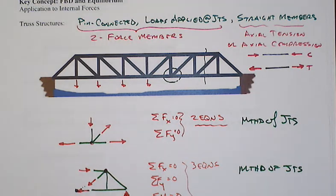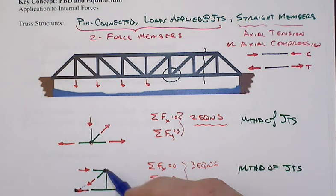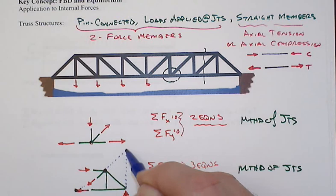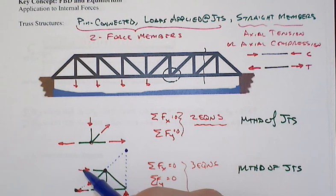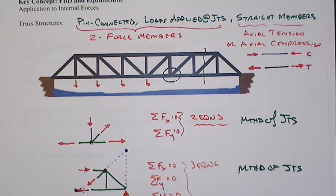Occasionally, you can go off the member and find another point, off the structure. For instance, in this case, I could take where the diagonal and the reaction intersect, sum moments about that point, and that would give me a relationship between these two chord forces. So that can sometimes be convenient as well. Don't always think about ones that are directly on the free body.